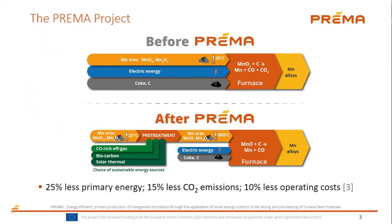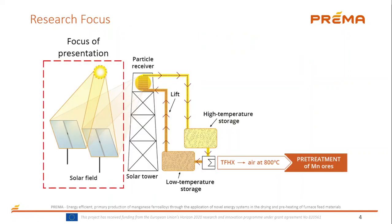The PREMA project is proposing to split the current submerged arc furnace smelting process into two stages, to include a pre-treatment stage, which is where heat from various sustainable sources will be introduced into the process. One of these sustainable sources being investigated is a concentrating solar thermal plant, which is the focus of this talk.